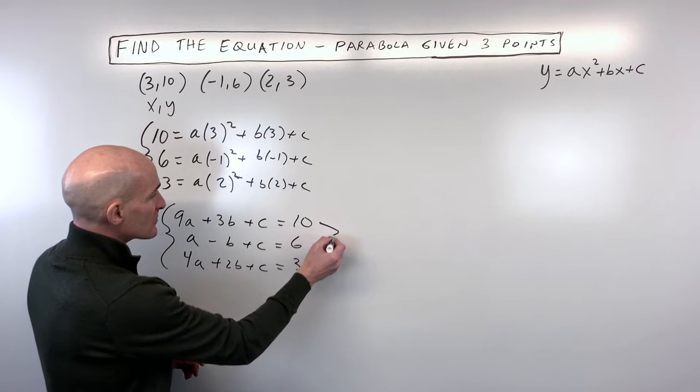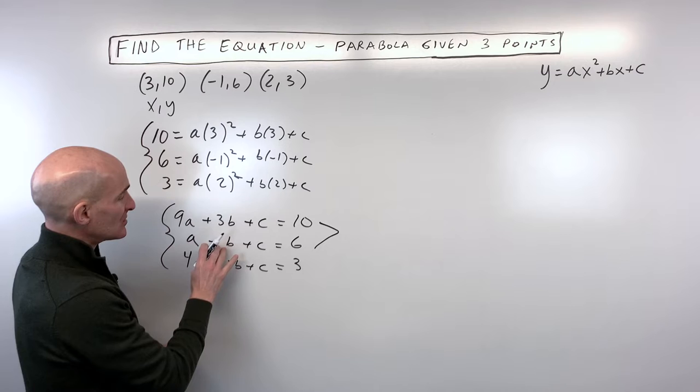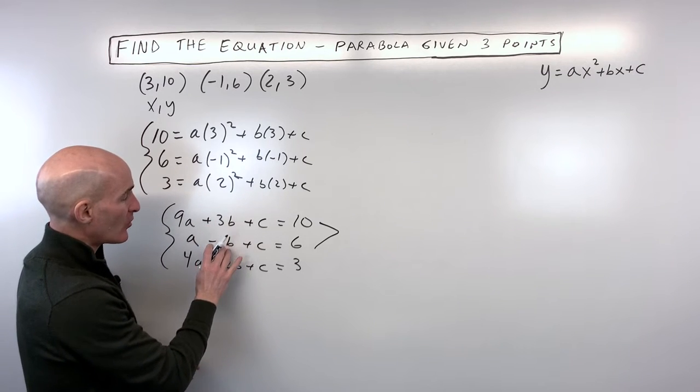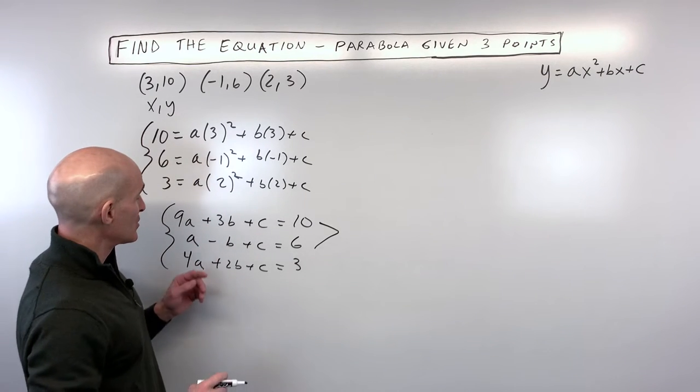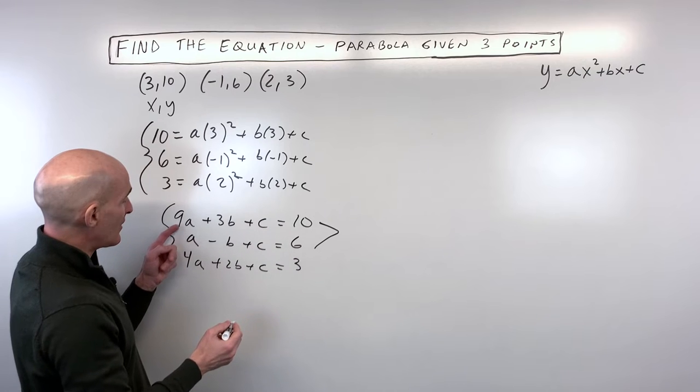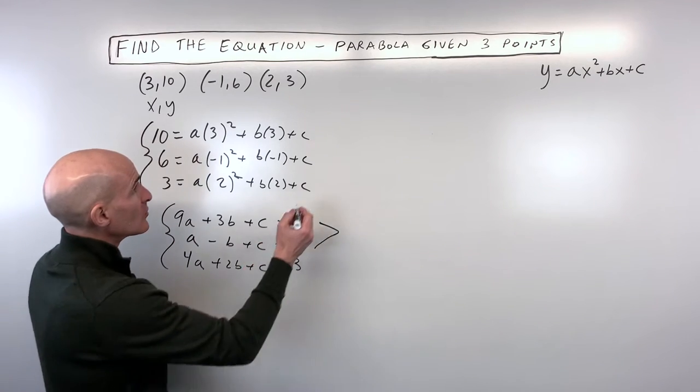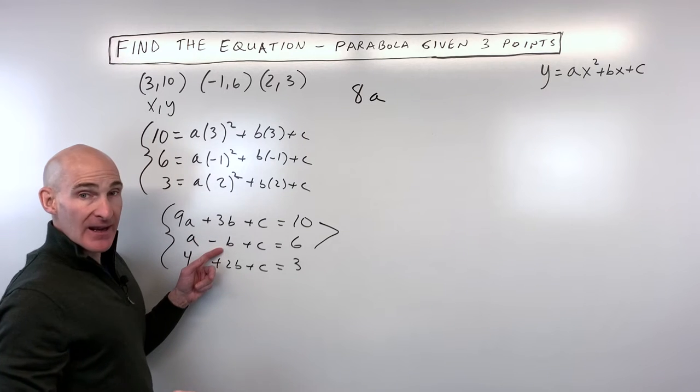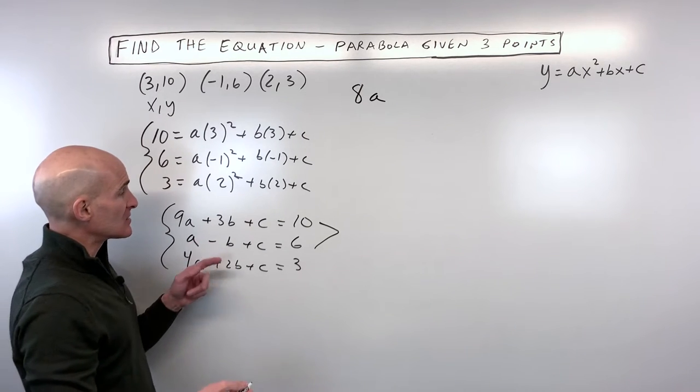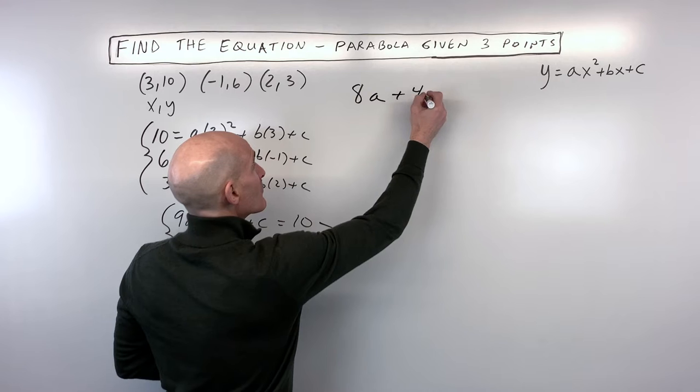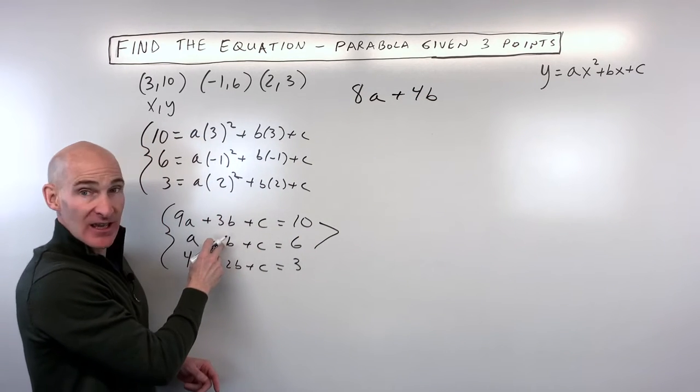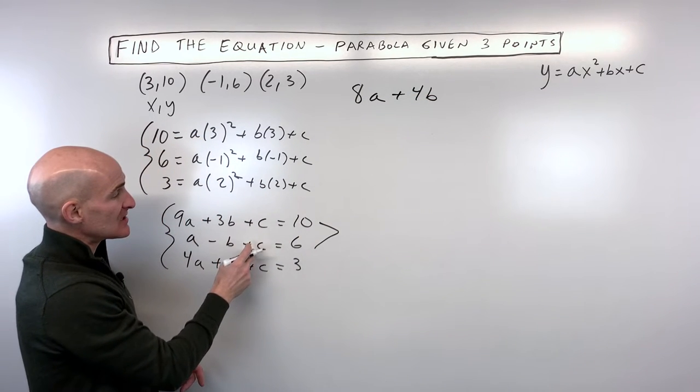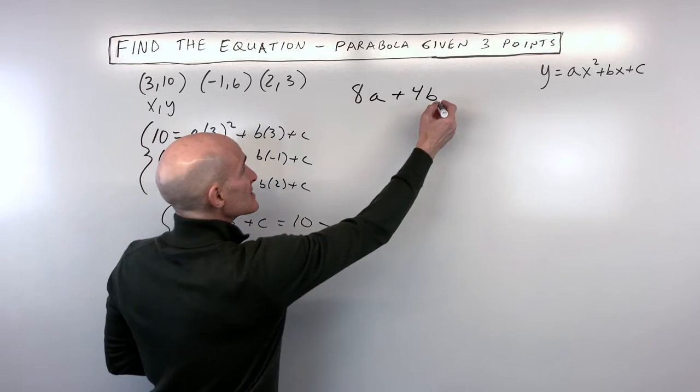So what I'm going to do is take the top equation minus the middle equation. So if I do that the c's will cancel out. So we have 9a minus 1a which is equal to 8a. 3b minus negative 1b is 4b because when you subtract a negative it's like adding the opposite. And c minus c is 0 and 10 minus 6 is equal to 4.